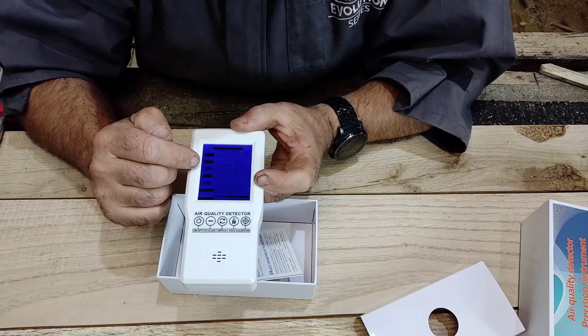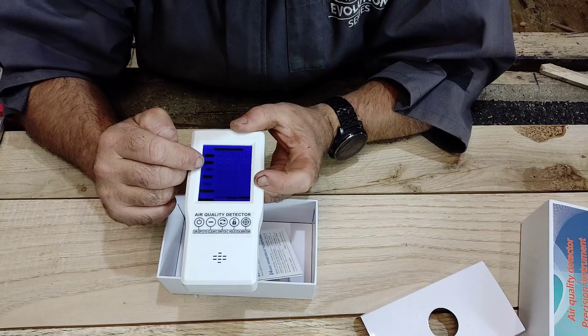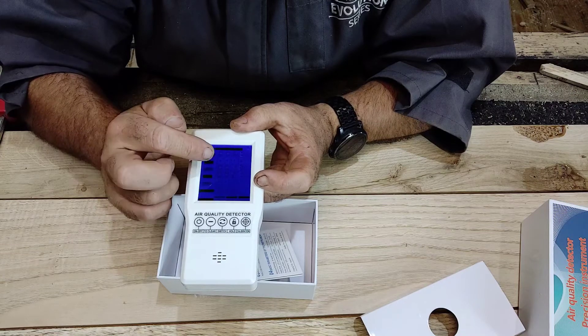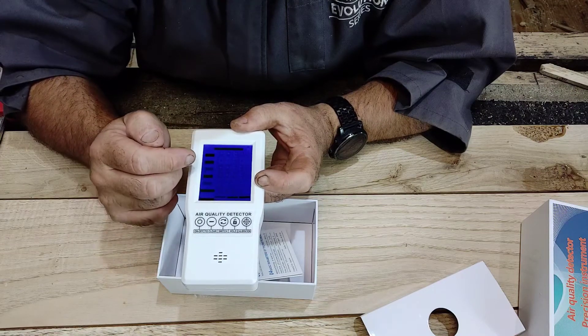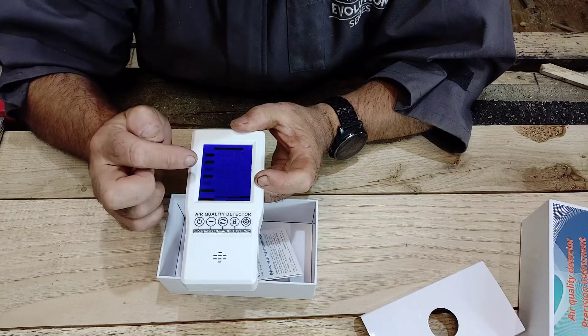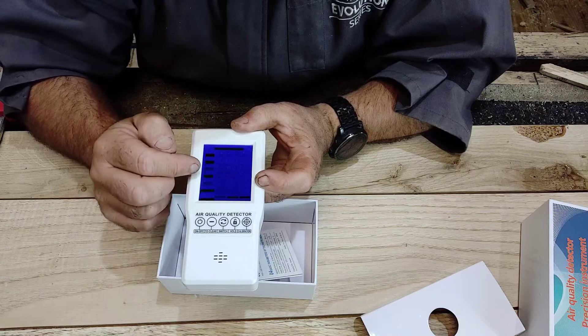But also here, this is the particle size - PM of 2.5 and PM 10. 30 and 21 respectively. So it doesn't mean there's more large particles than there's smaller particles. I'm not quite certain, I need to find out about that. The CO2 isn't registering because there is none, pretty much.